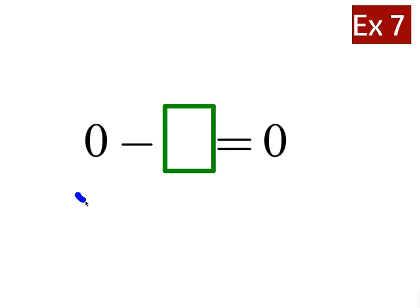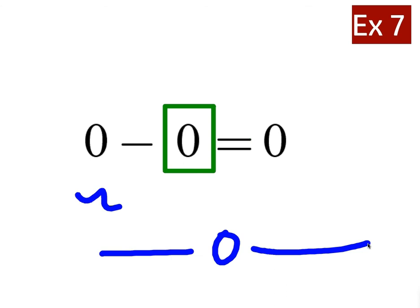If you start with 0, you could put negative 0 or positive 0 in there, but 0 doesn't have a sign, so we just put 0. If you start at 0, you're already at 0 on the number line, so you wouldn't have to subtract anything — you'd just stay there.